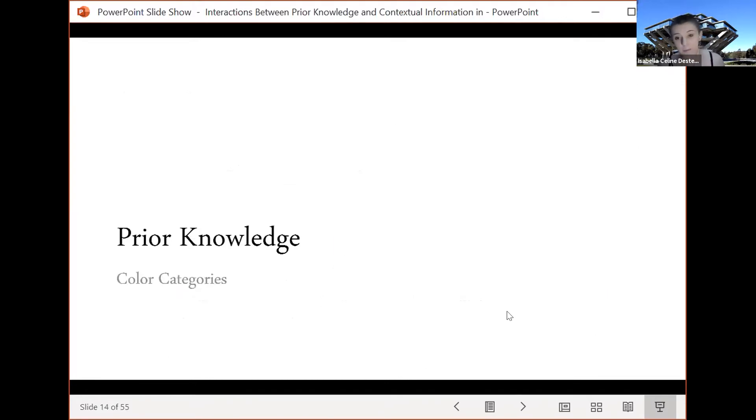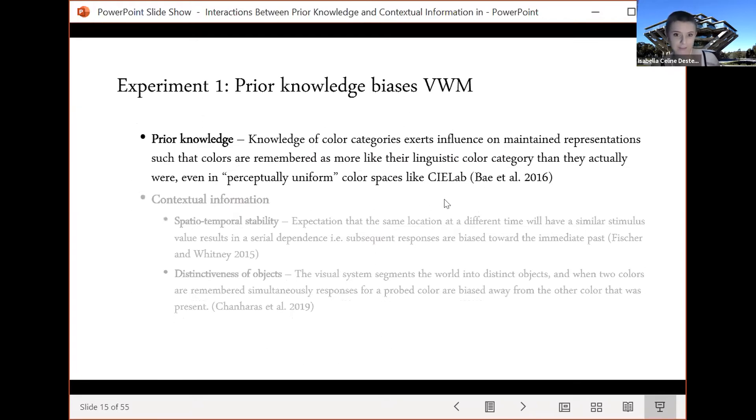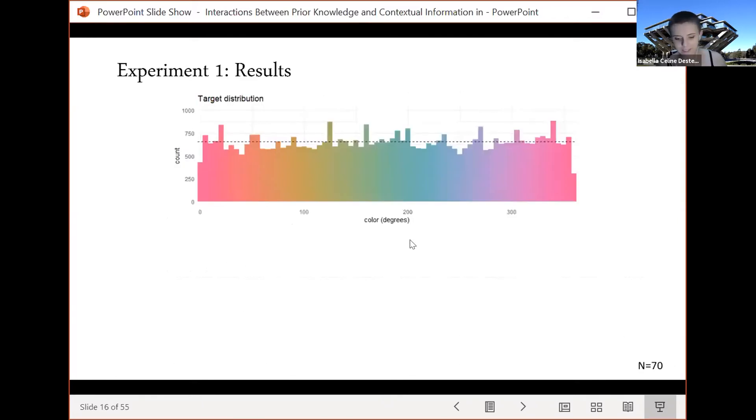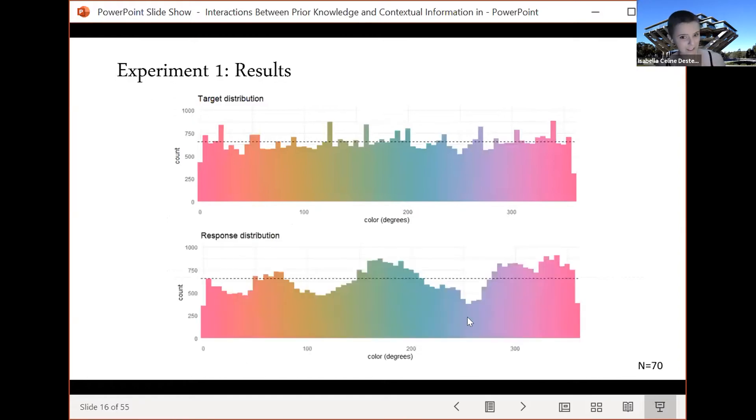In experiment one we looked at prior knowledge which is the bias of color categories so we expect to see some sort of non-uniformity in the distribution. Consistent with previous results when we show people a target distribution of uniform colors their responses are significantly more non-uniform.